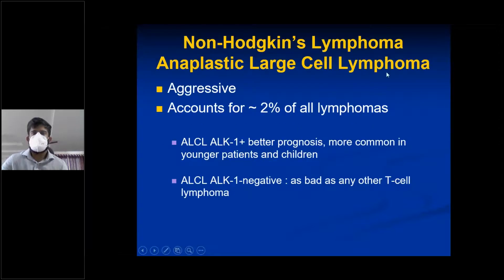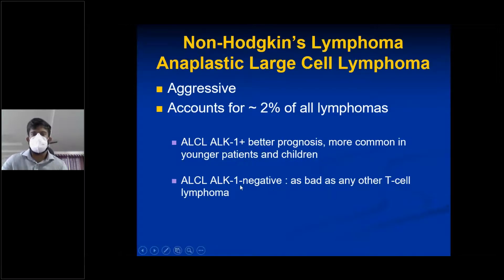Anaplastic large cell lymphoma is aggressive and accounts for 2% of all lymphomas. ALK1-positive has better prognosis and is more common in younger patients and children. ALK1-negative has prognosis as bad as any other T-cell lymphoma.